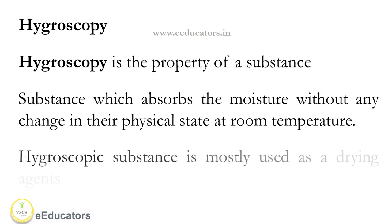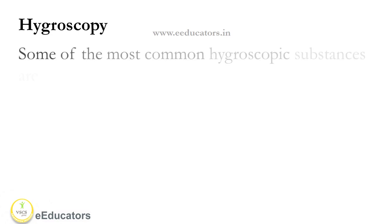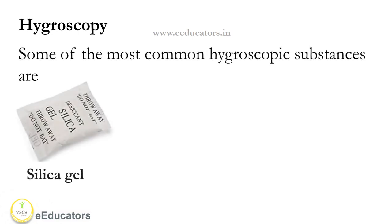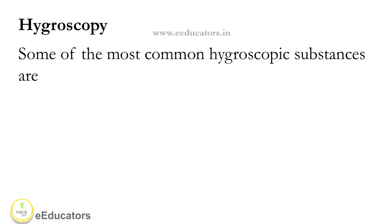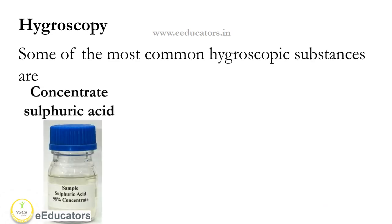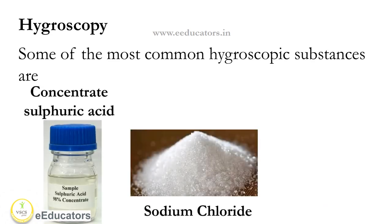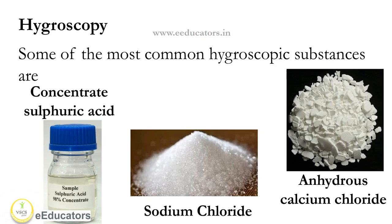Hygroscopic substances are mostly used as drying agents. Some of the most common hygroscopic substances are silica gel, quicklime, phosphorus pentoxide, concentrated sulfuric acid, sodium chloride, and anhydrous calcium chloride.